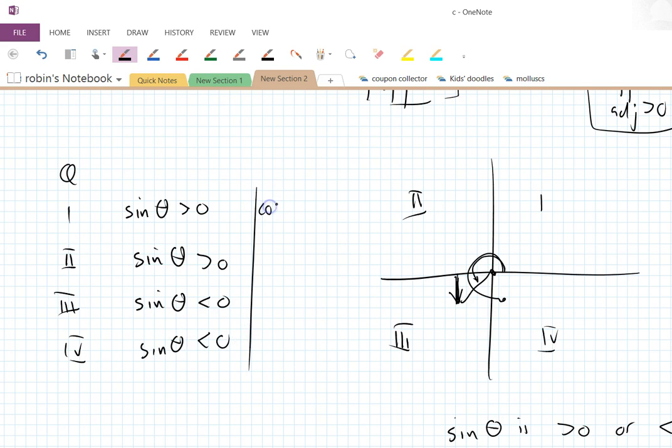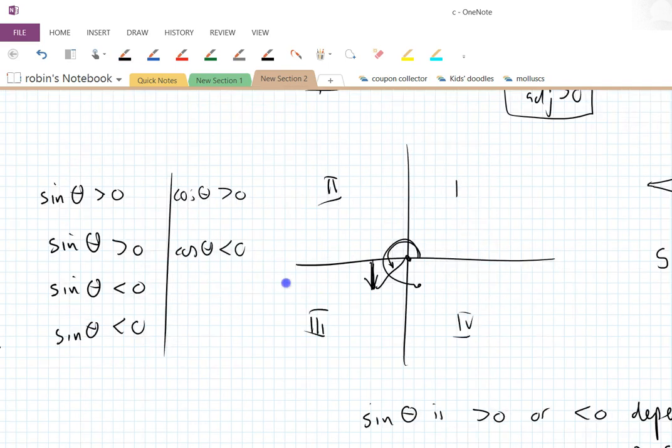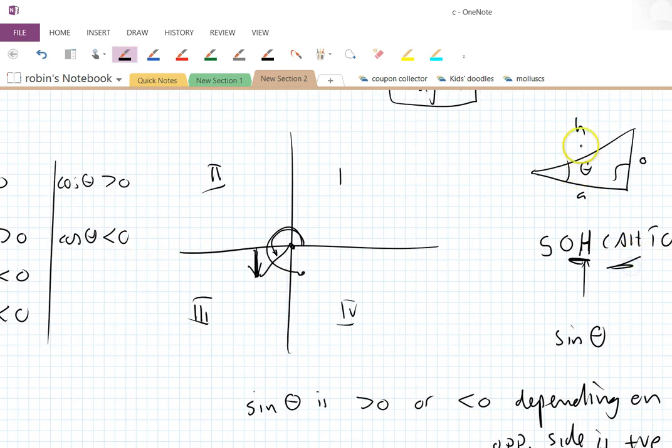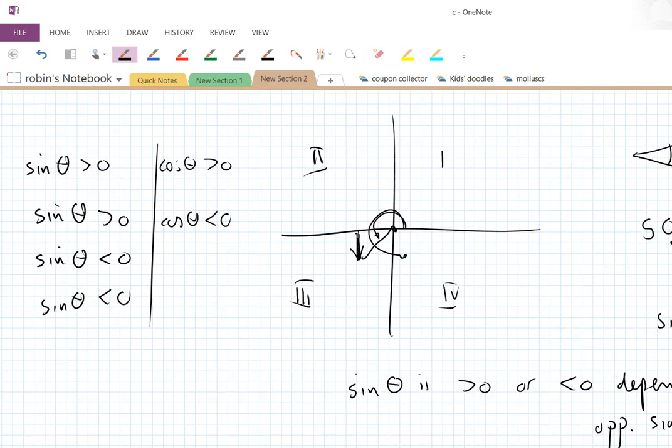And we can do the same for cosine. Cosine theta is positive in quadrant one. In quadrant two, cosine theta is negative because cosine is adjacent over hypotenuse. So cosine theta is negative because the adjacent is negative over hypotenuse. Quadrant three, cosine theta is less than zero. And cosine theta is greater than zero in quadrant four because the adjacent side is positive. Okay, I'm going to stop there.